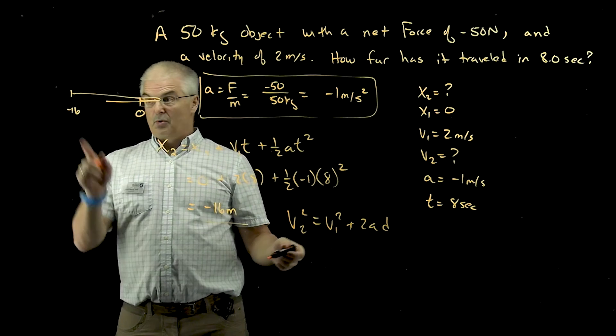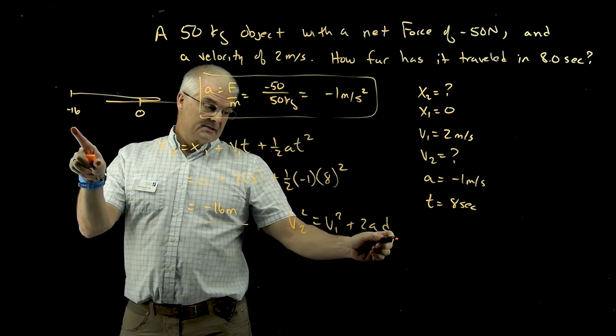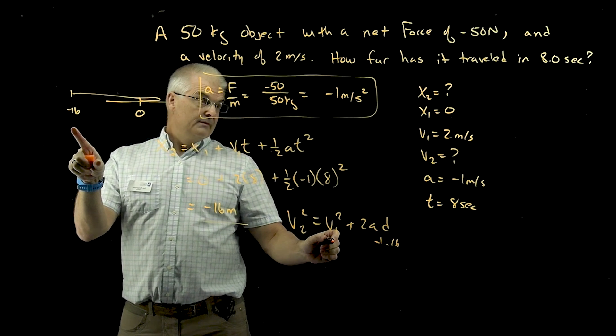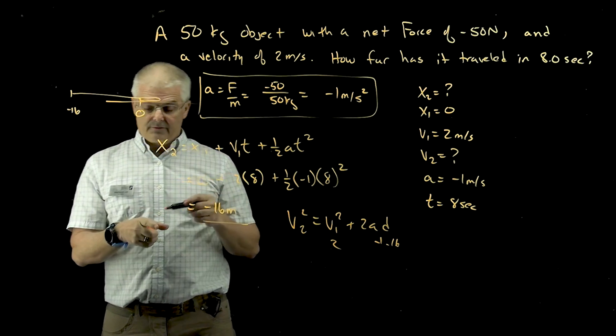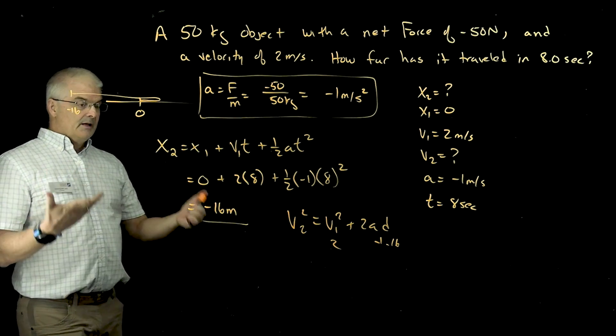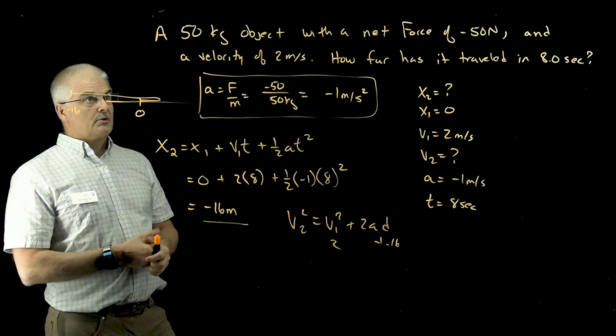You know, if I ask that question, you know, do V2 squared equals V1 squared plus 2AD, right? So at this point, the D is negative 16. This is negative 1. V1 was 2. Boom. And you could solve for what is the final velocity, and you could figure that out. I mean, those are the kinds of questions you'll be asked.